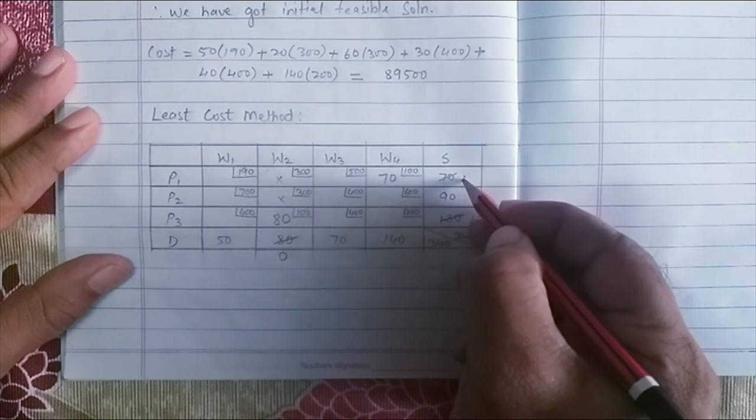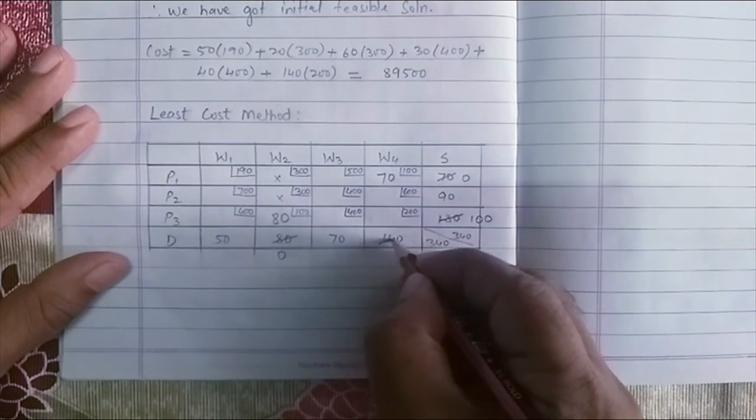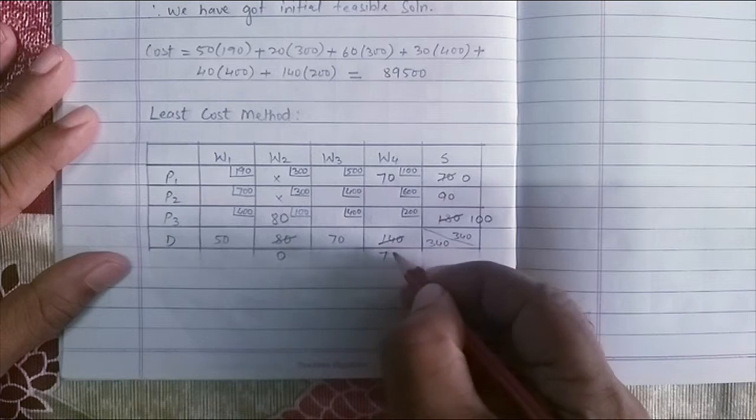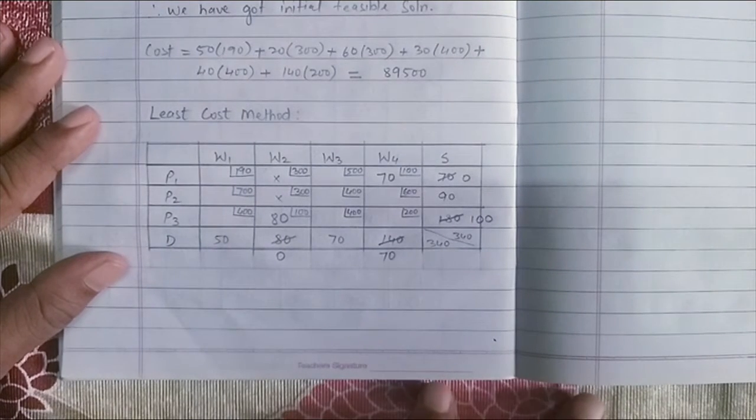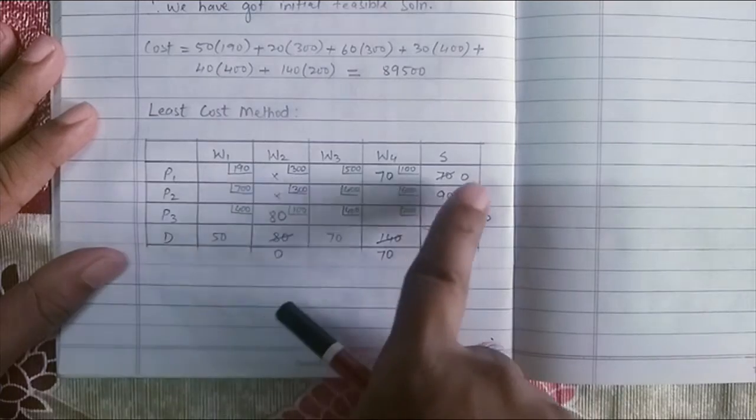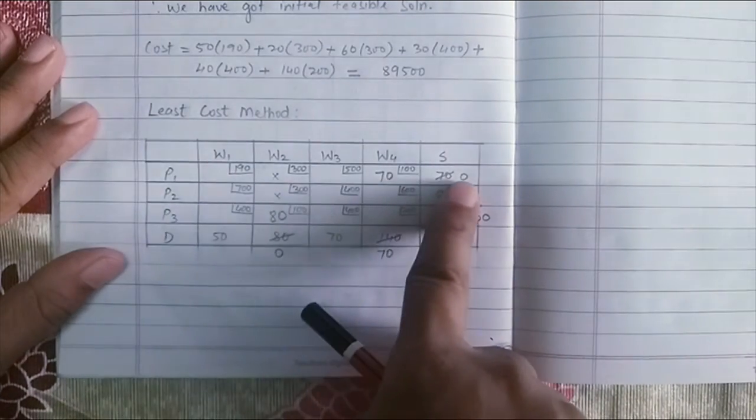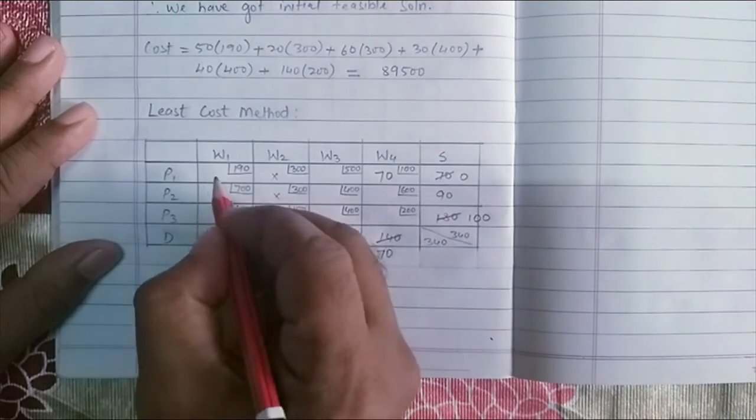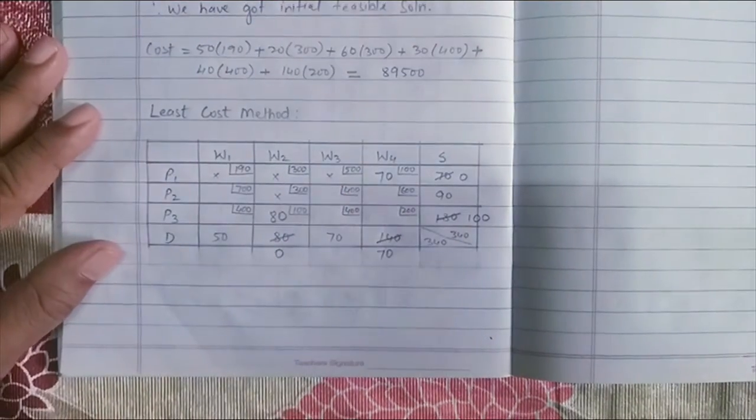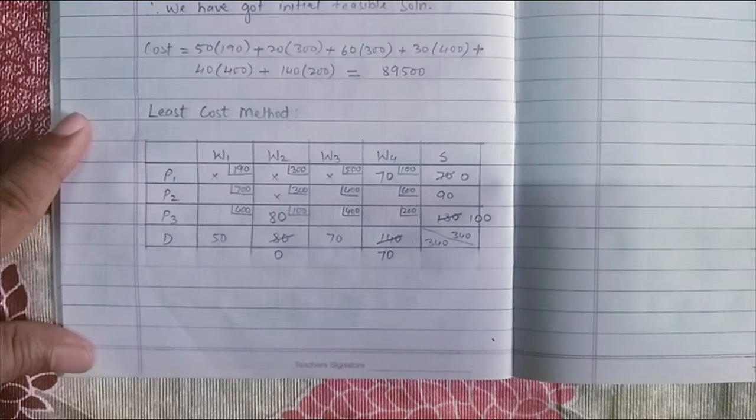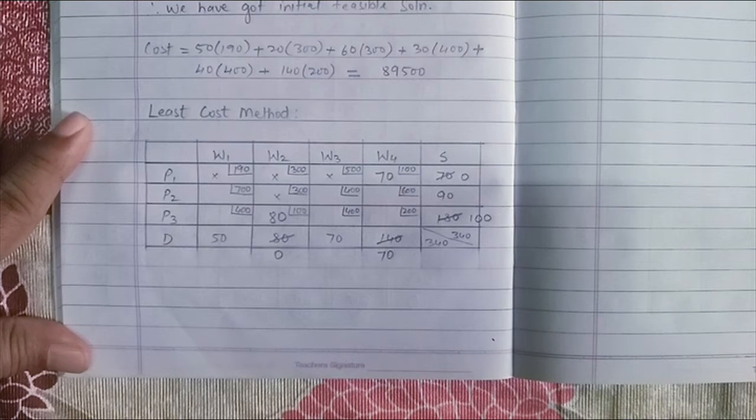Subtract 70 from my supply, 70 from my demand. So I get 0 and then I get 70 here. This row will have no more allocations. So I will just put a cross in these two cells. I need not consider these cells for the next allocations.